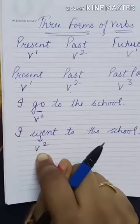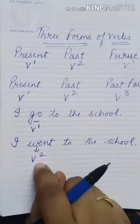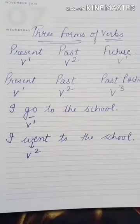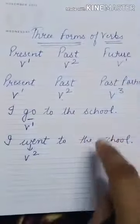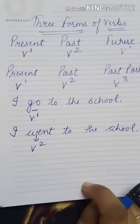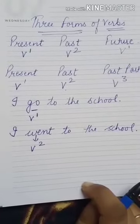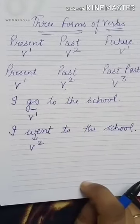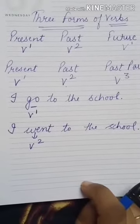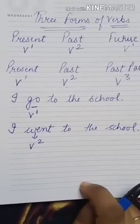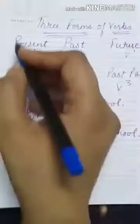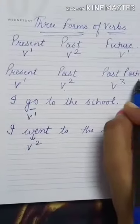If we want to make a sentence in past tense, we should know the second form of the verb. One student asked me why we have to learn this. I told them: you have to learn it like multiplication tables — two ones are two, two twos are four. In English you have to learn and memorize three forms of verbs.